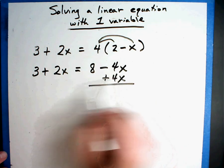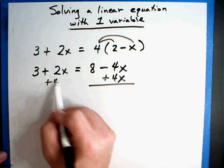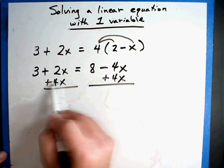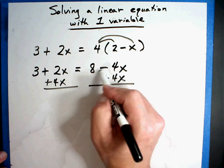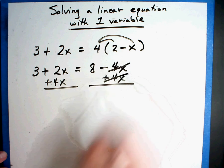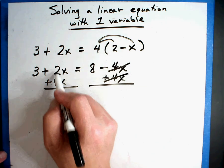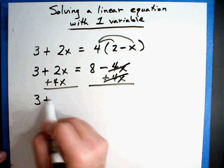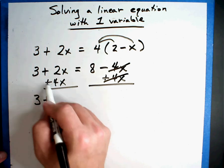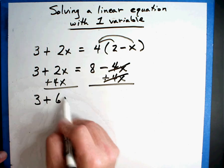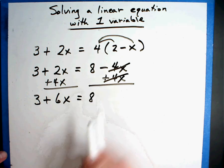So I did it on both sides of the equal. Minus 4X and plus 4X, that's gone, it cancels. So I have 3 plus, plus and a plus I'm adding is plus 6X equals 8. That's looking better.